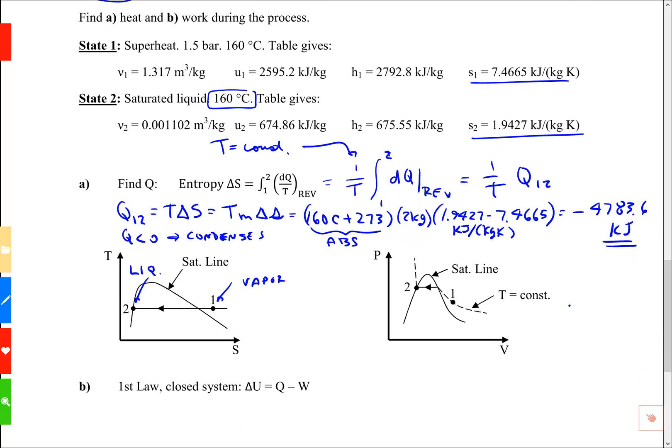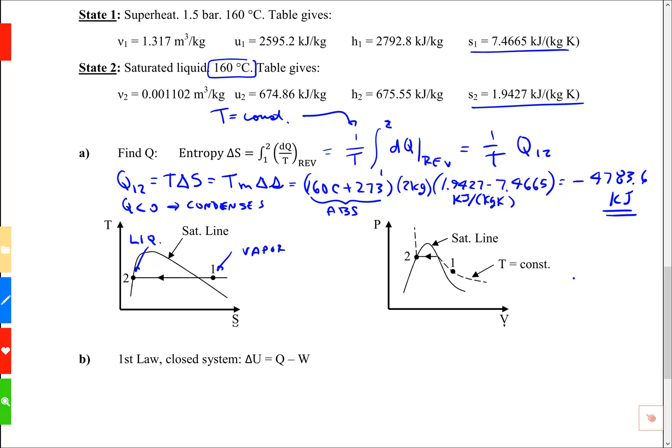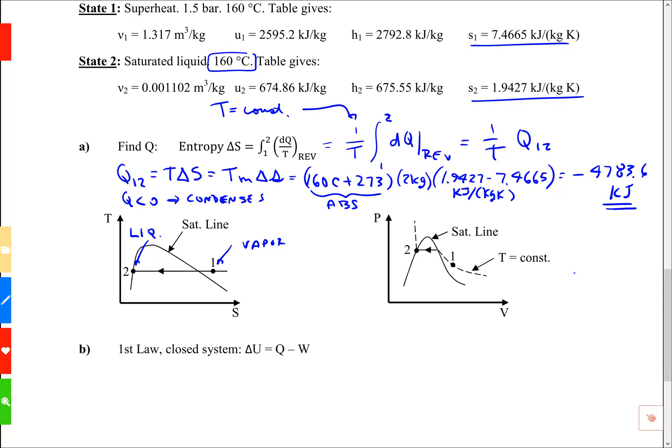Let's look at part B. Part B says, what's the work? I'm going to pull in the first law for closed system is ΔU equals Q minus W. You can always use the first law. I'm just going to solve this for W.